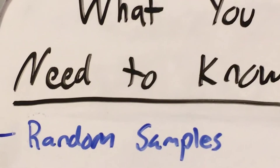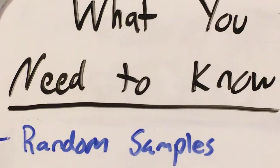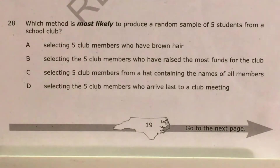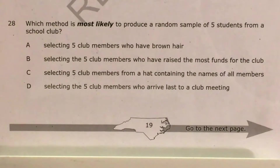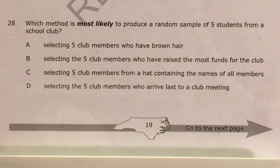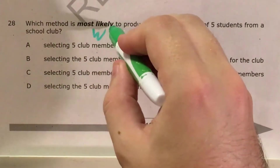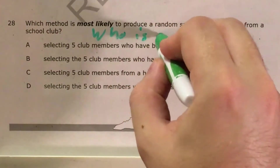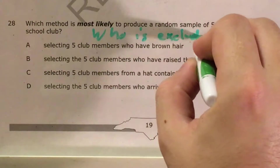So the big skill that this is testing us on is how best to take a random sample. Now, the big question that I like to ask whenever I see a problem like this that deals with random samples is the question of who is excluded by each method.